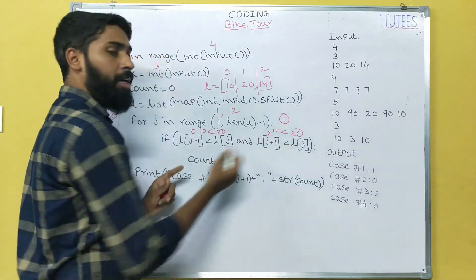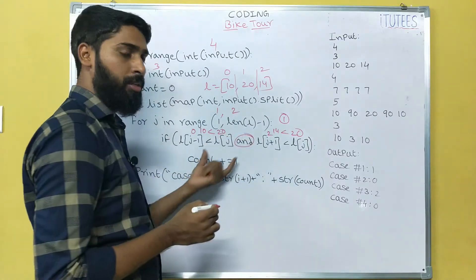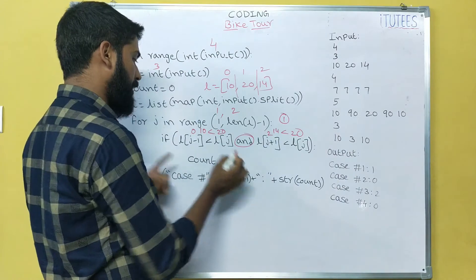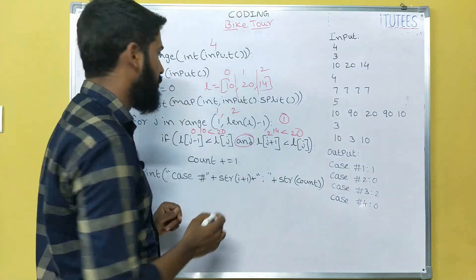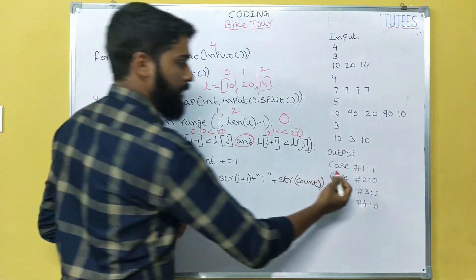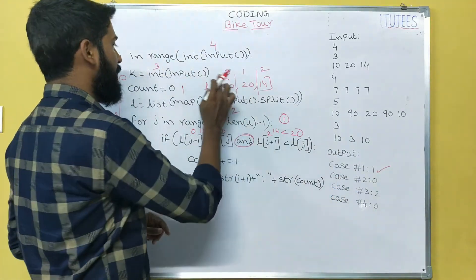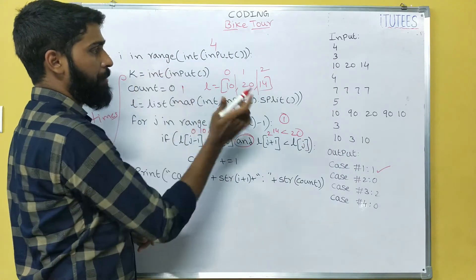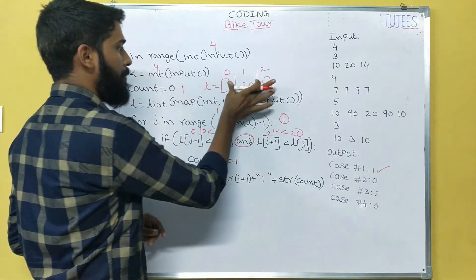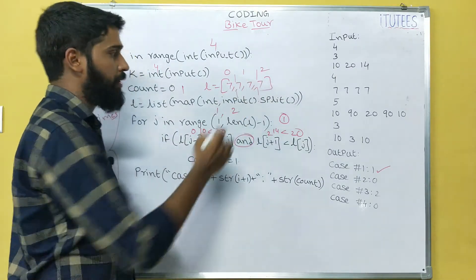Both conditions — L[J-1] < L[J] and L[J+1] < L[J] — are true, so we enter the body and increment count. Count equals count plus 1, so count equals 1. We then print: Case #1 = 1.